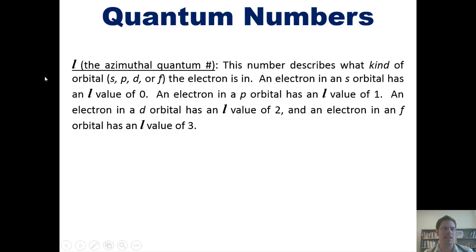Now, the next quantum number is the L, or azimuthal quantum number. This number describes what kind of orbital, either s, p, d, or f, the electron is located in.